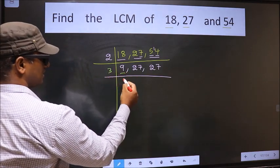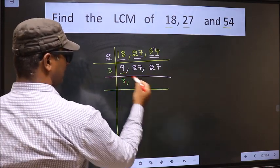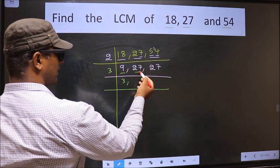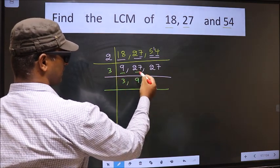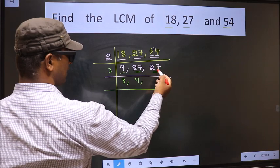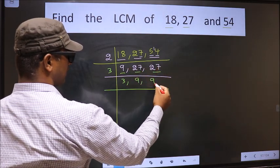Now here we have 9. 9 is 3 threes. The other number, 27. When do we get 27 in the 3 table? 3 nines, 27. The other number, 27. When do we get 27 in the 3 table? 3 nines.